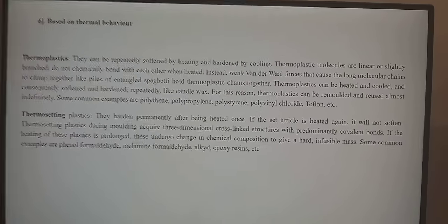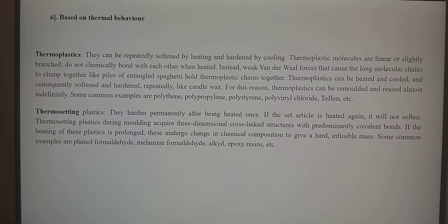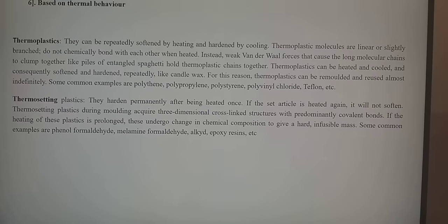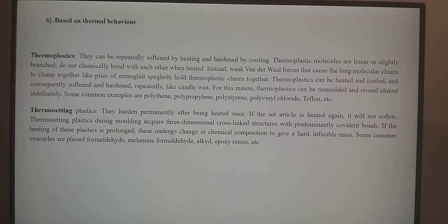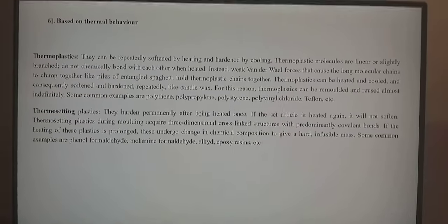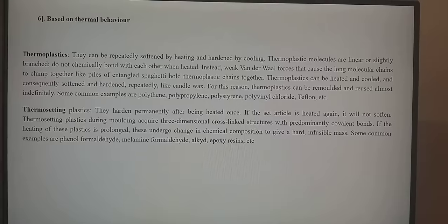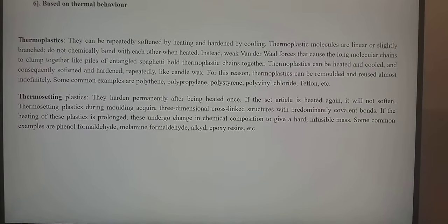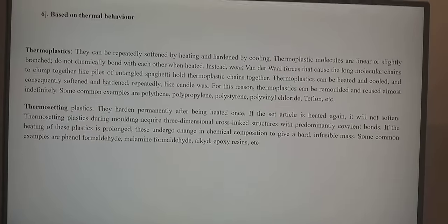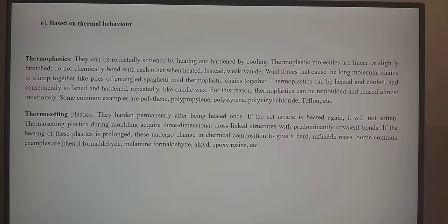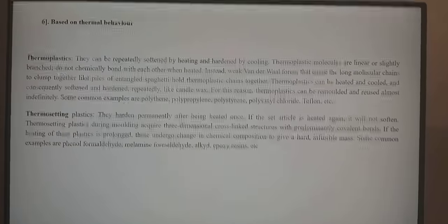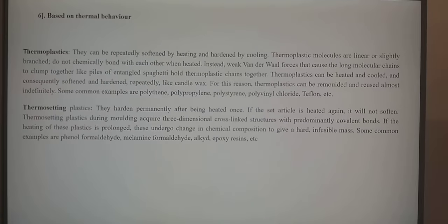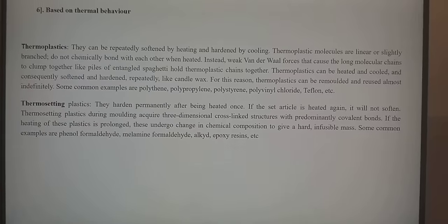Thermoplastics can be heated and cooled, and consequently softened and hardened. For this reason, thermoplastics can be remolded and reused almost indefinitely. Examples include polythene, polypropylene, polystyrene, polyvinyl chloride, Teflon, etc. Thermosetting plastics harden permanently after being heated once — if they are set, they cannot be changed. During molding, thermosettings acquire three-dimensional cross-linked structures with predominantly covalent bonds. If heating is prolonged, they undergo change in chemical composition to give a very hard, infusible mass. Common examples include phenol formaldehyde, melamine formaldehyde, alkyd epoxy resins, etc.